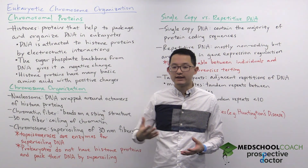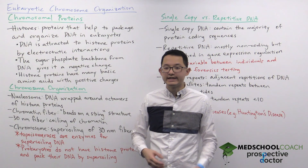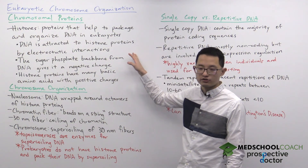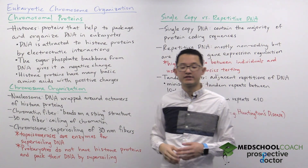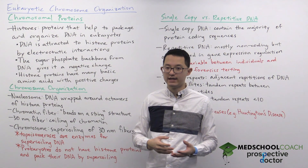You can see how they work in this diagram. Essentially, DNA wraps around these histone proteins to form structures called nucleosomes. The binding interaction between histone proteins and DNA is an attractive electrostatic interaction, which means it's between positive charges and negative charges.